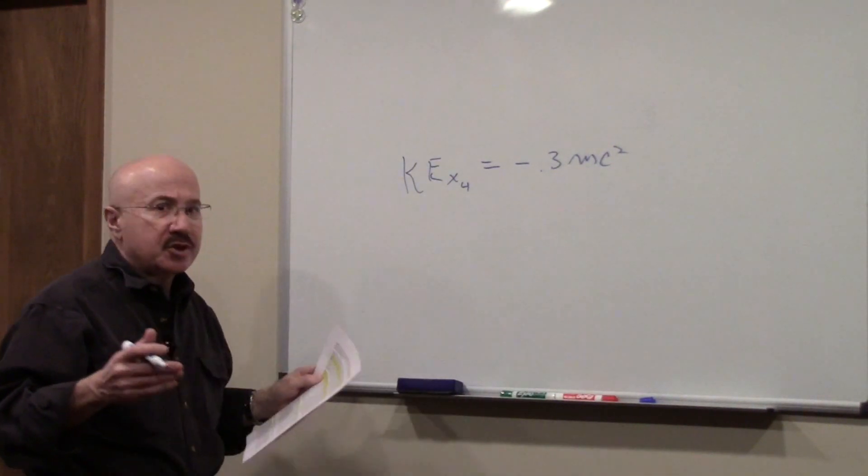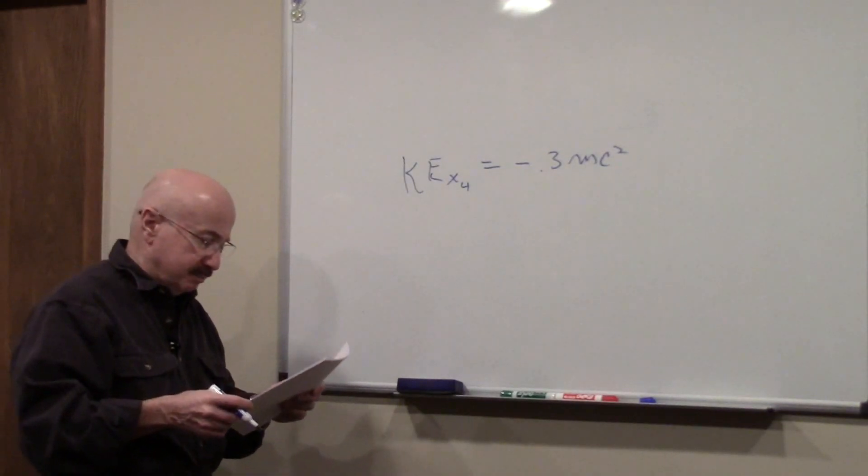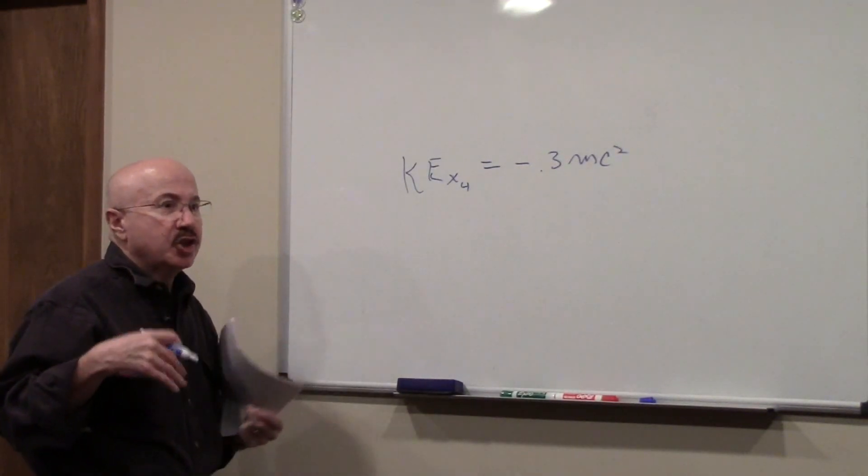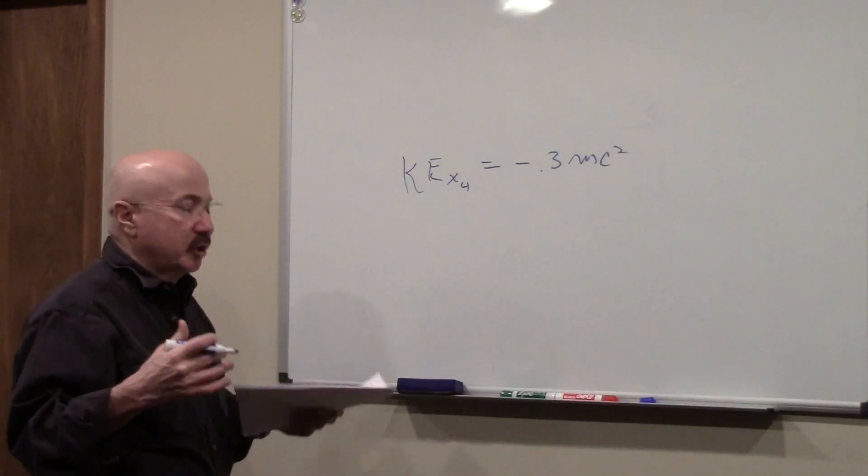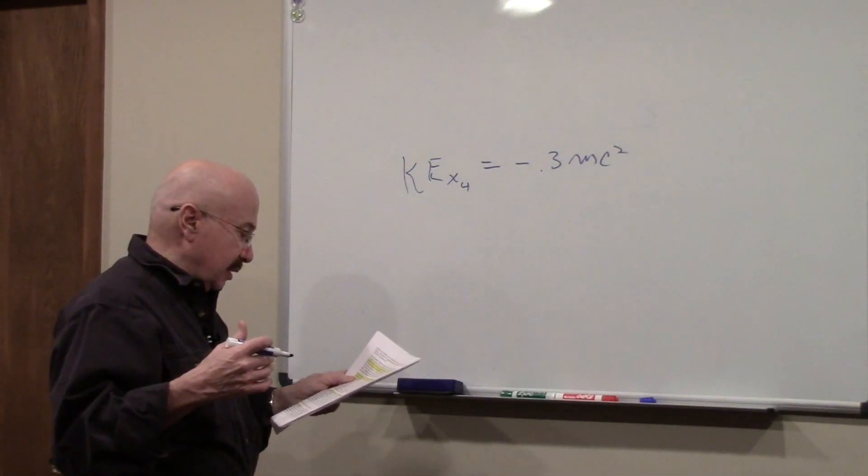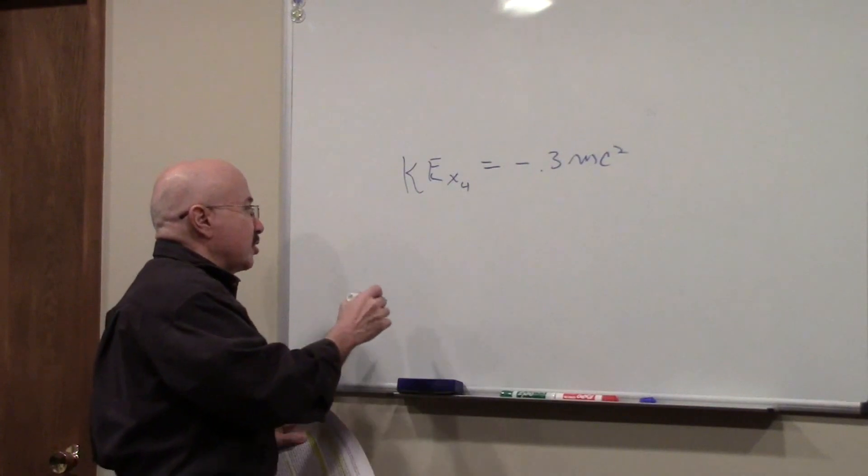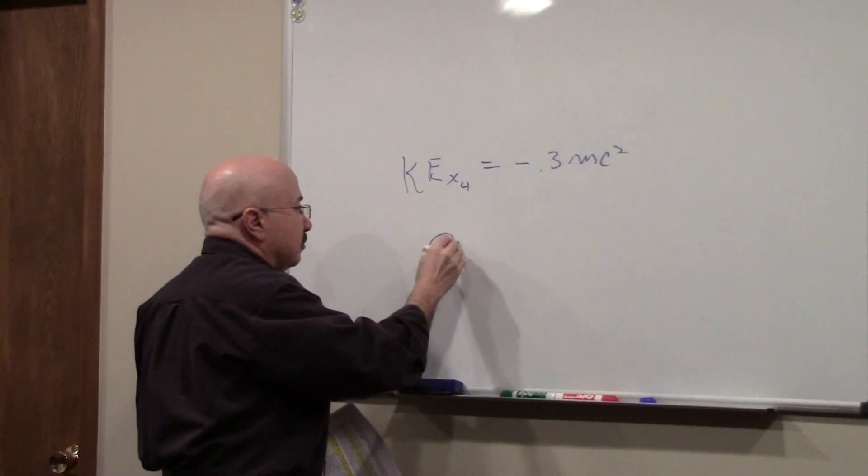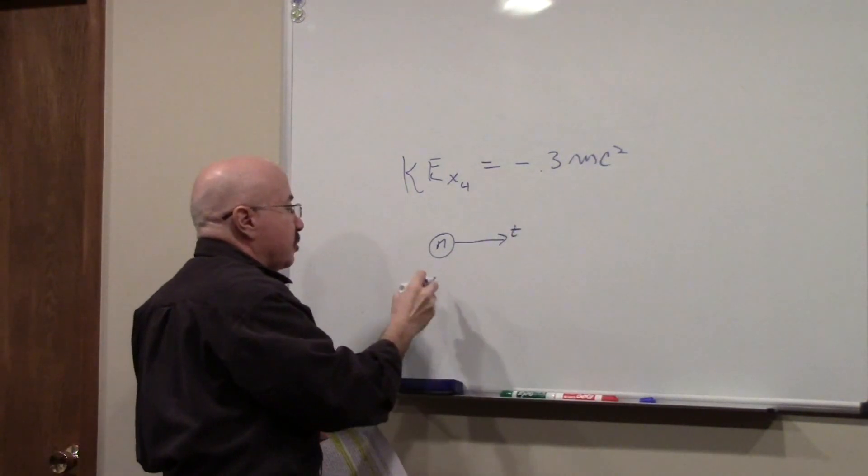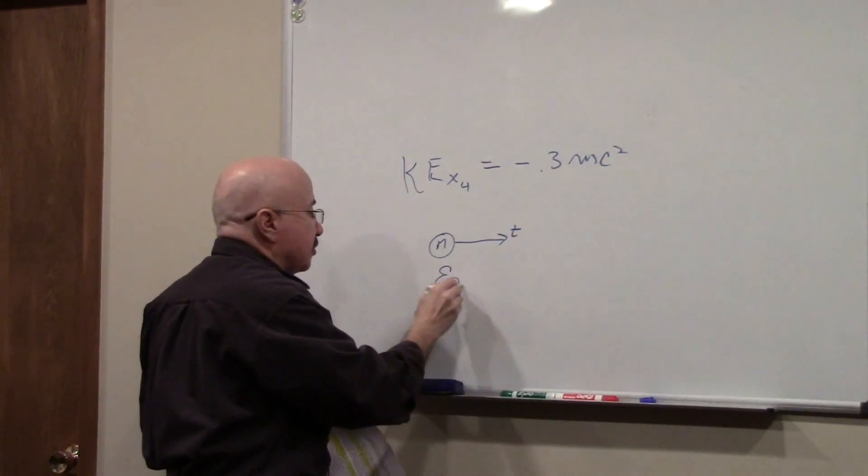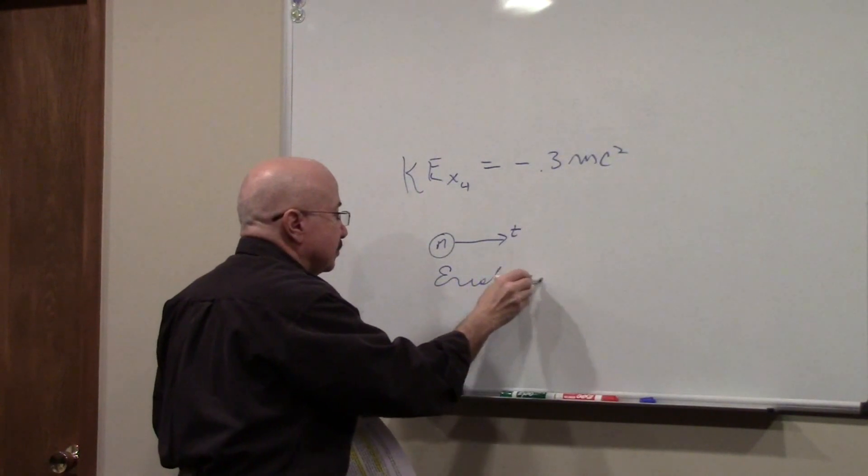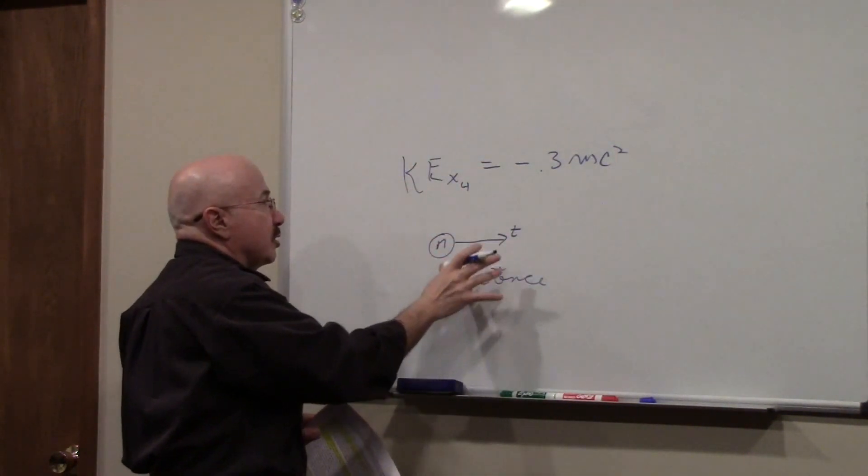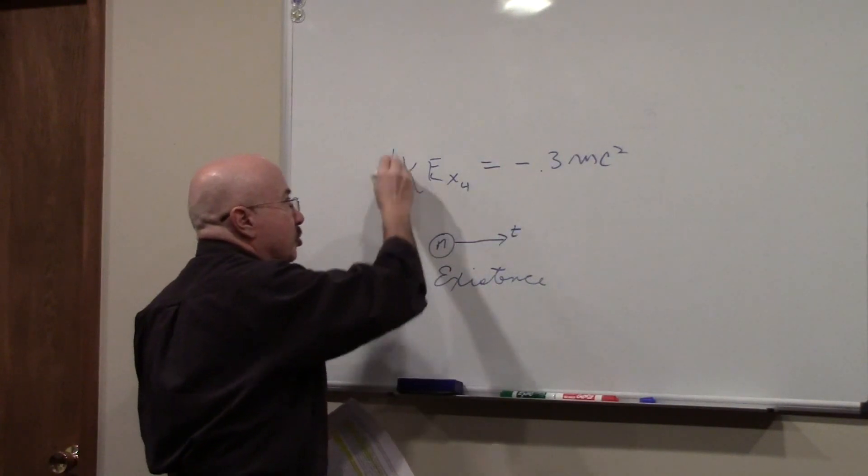Now, what does this suggest about the nature of time? According to our definition, the way we're looking at time, time is a measure of existence. So a mass moving in time is, by definition, existence. And the energy it requires to exist is defined by this equation.